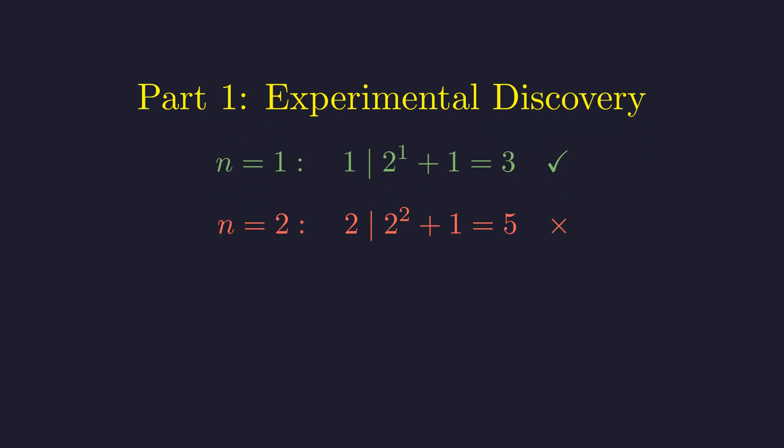For n equals 2, 2 does not divide 5 since 5 is odd, so n equals 2 fails.